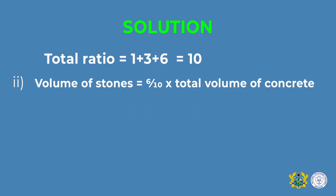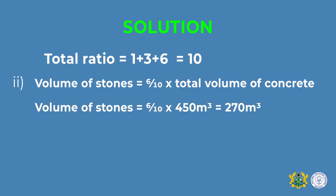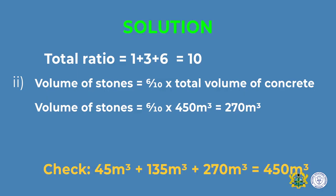Then find the volume of stone. The ratio for stone is 6, so divide 6 by the total ratio of 10 and multiply by 450 — the total volume of concrete — arriving at 270 cubic meters. You can also check to prove your answer is correct by adding the volume of cement plus the volume of sand plus the volume of stone: 45 + 135 + 270 = 450, which is the same as the total volume given in the question.